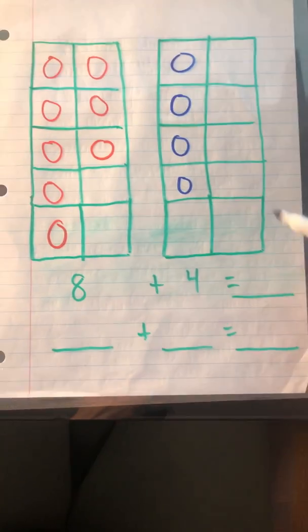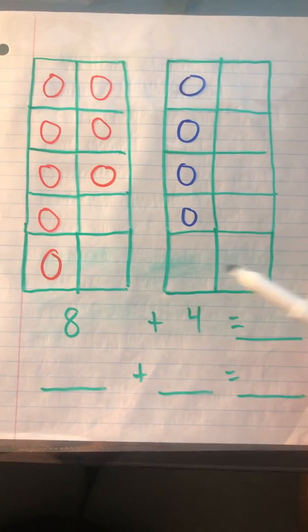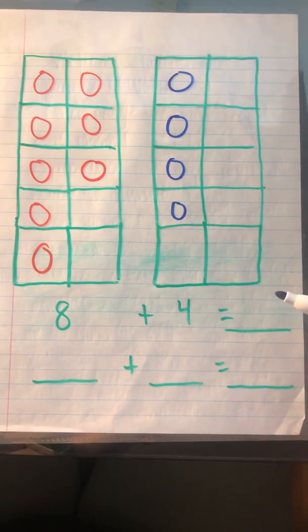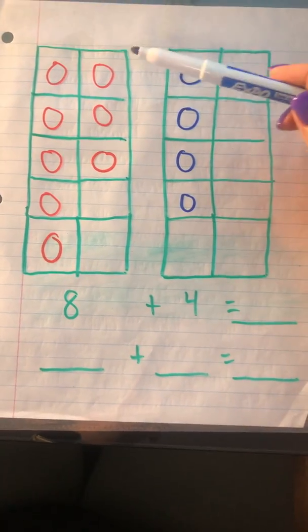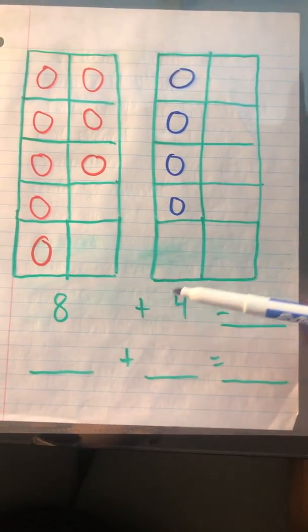So I've just taken another piece of loose leaf and drawn two tens frames so I can set up my problem and make a friendly 10.